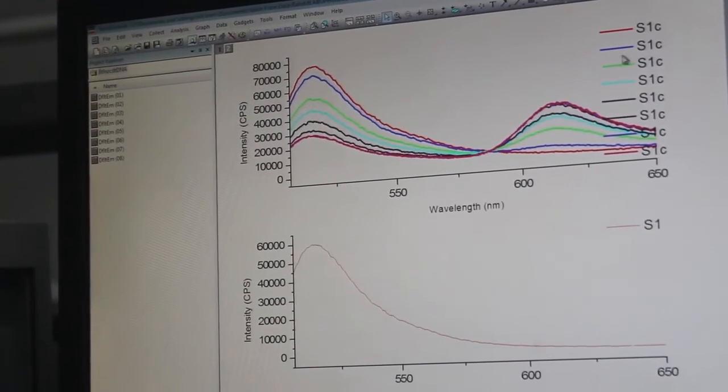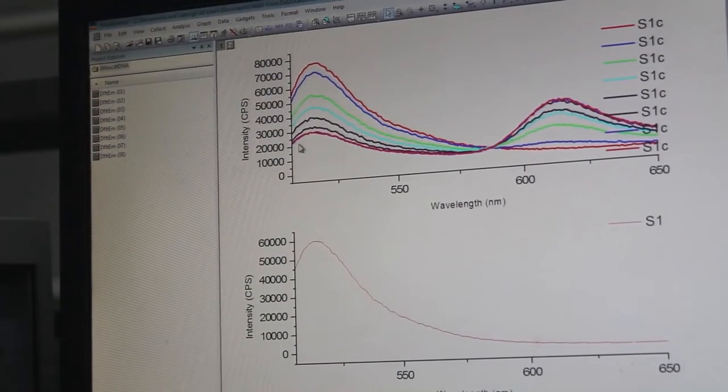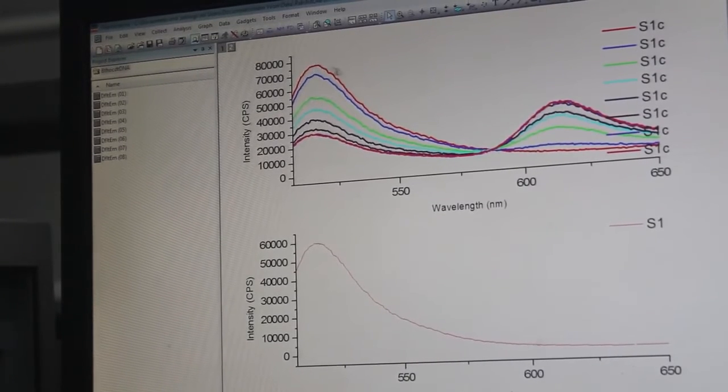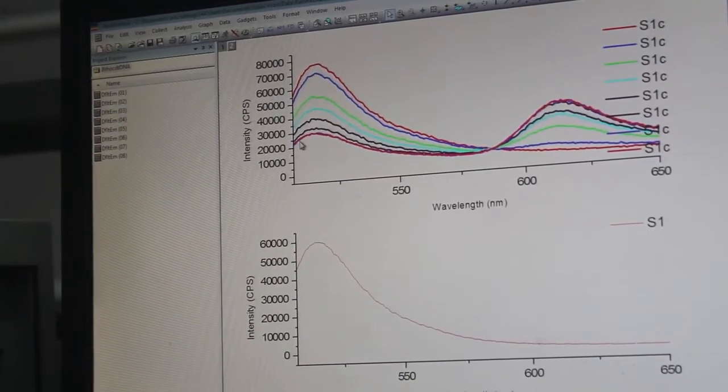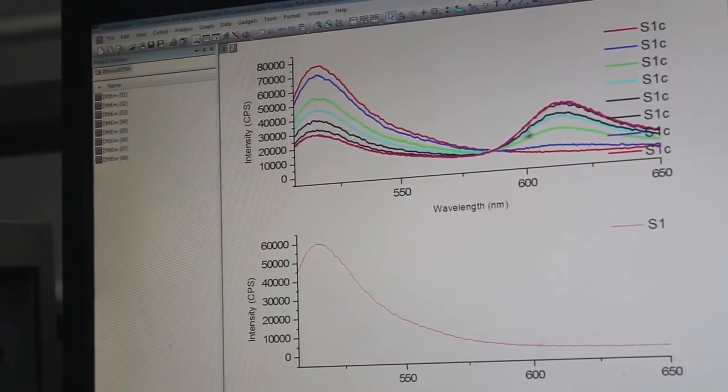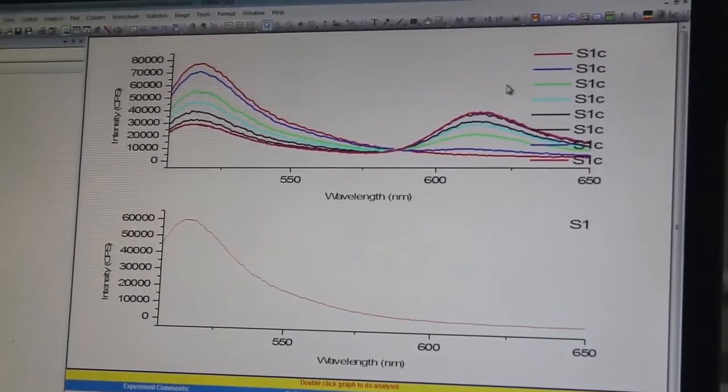From this spectra, we are going to calculate the FRET efficiency from the intensity of the donor when there was no acceptor and comparing with the intensity of the donor in presence of the saturating amount of acceptor. Now our experiment is over.